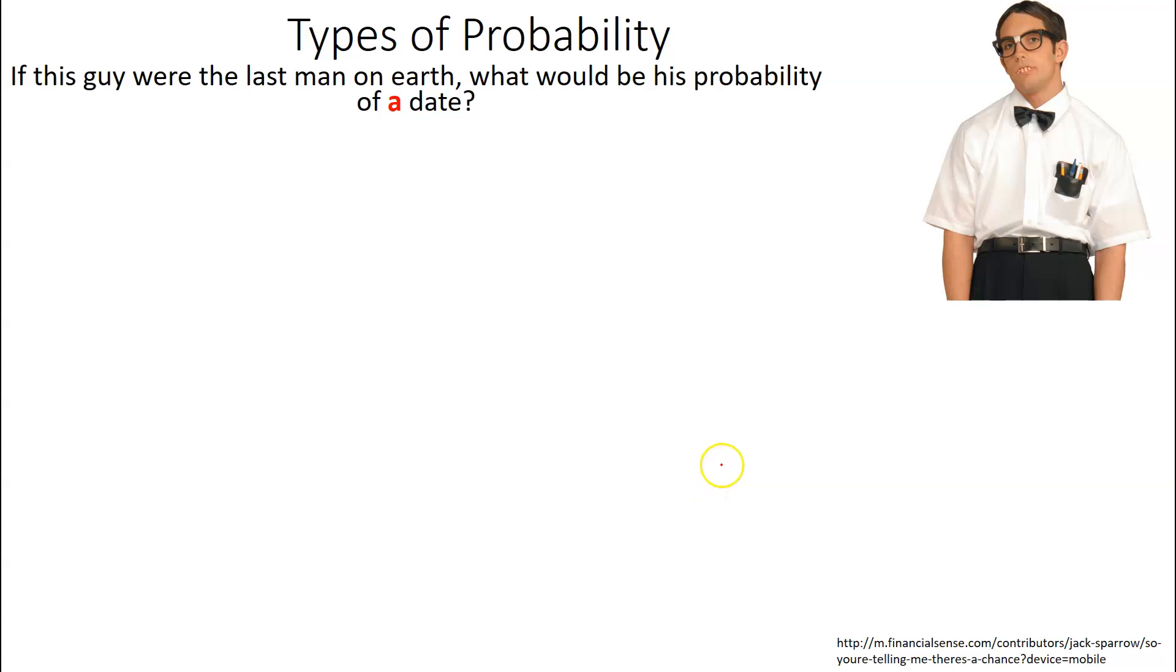All right, let's keep going here. Let's practice this a little bit. Types of probabilities. So we have these three types. So we're going to have a little fun here. So there's this gentleman here, and he's looking to get a date. And I'm sure you've heard the expression before, not if you were the last man on earth. So this guy, if he were the last man on earth, what would be the probability of getting a date? Let's look at the three types of probabilities to determine what that is.